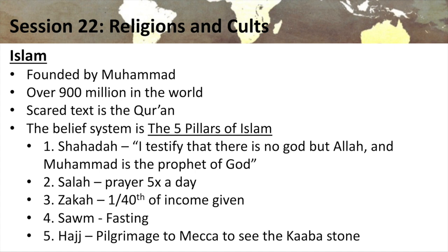Some radicalized Muslims also believe that Jihad — holy war — is part of their faith, and we are definitely living in times when radical Islamists are conducting violent activities around the world. But the Five Pillars — saying the Shahada, praying five times a day, giving 1/40th of income annually, fasting during Ramadan, and making the Hajj once in a lifetime — make Islam a very simple religion for someone to follow.